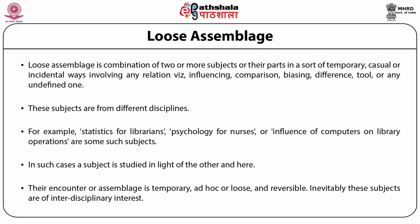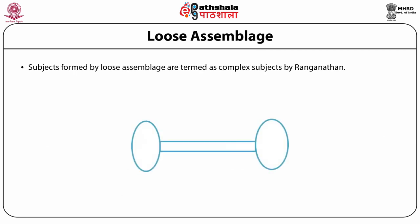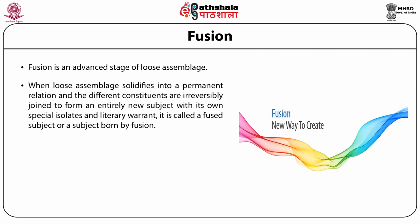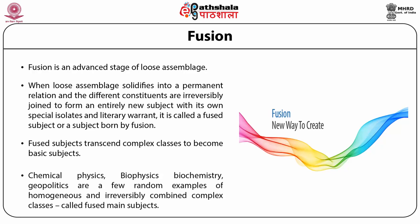For example, statistics for librarians, psychology for nurses, or influence of computer-driven library operations are some subjects formed by loose assemblage — and they are interdisciplinary. In such cases, a subject is studied in light of the other, and their encounter or assemblage is temporary, ad hoc, loose and reversible. These subjects are of interdisciplinary interest and are also known as two-phase subjects. Fusion is an advanced stage of loose assemblage — when loosely assembled subjects solidify into a permanent relation, and the different constituents are irreversibly joined to form an entirely new subject, it is called a fused subject. Chemical physics, biophysics, biochemistry and geopolitics are examples of fused main subjects.